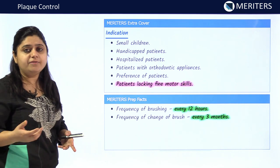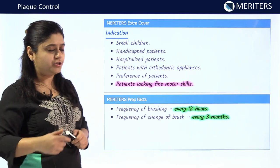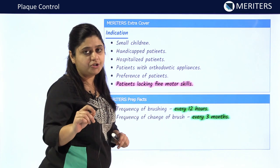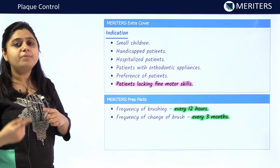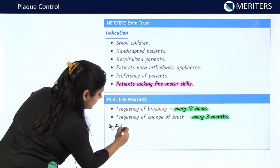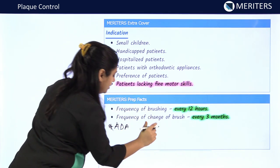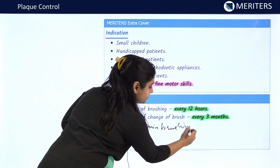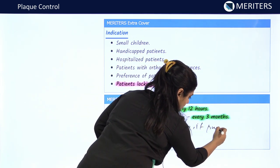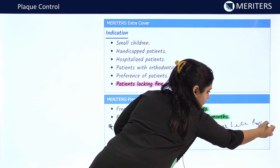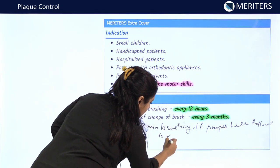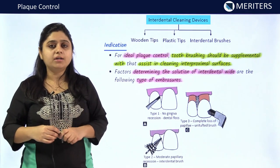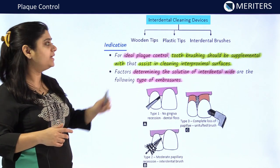Regarding brushing frequency: we should brush twice daily, every 12 hours, and change our brush every three months. According to ADA, if proper brushing technique is followed, 2 minutes of brushing is sufficient to clean the teeth and maintain healthy gingiva. For ideal plaque control, toothbrushes should always be supplemented with interdental cleaning devices.